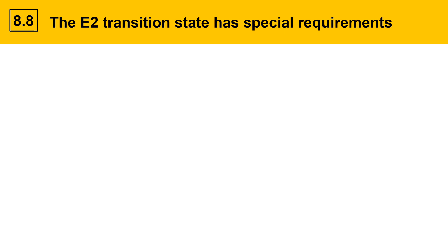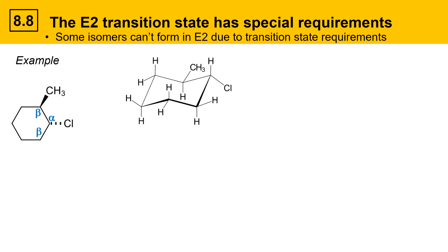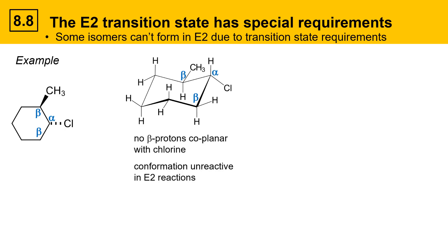Let's look at another example that's a little more complicated. This example illustrates how some isomers can't form in E2 reactions due to transition state requirements. Consider a chlorocyclohexane substituted with a methyl group. The molecule has an alpha position where chlorine is attached and two distinct beta positions on the ring. In one chair conformation, the chlorine is equatorial and the methyl is equatorial as well — this conformation has no protons coplanar with chlorine and is therefore unreactive in E2 reactions.